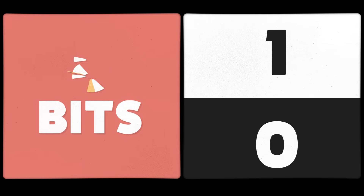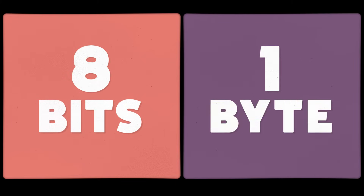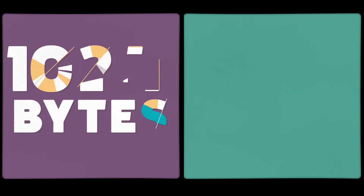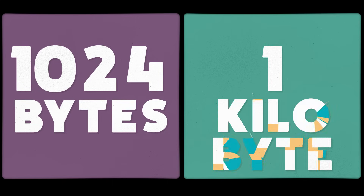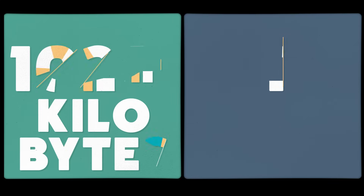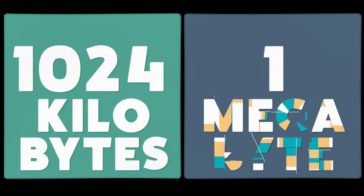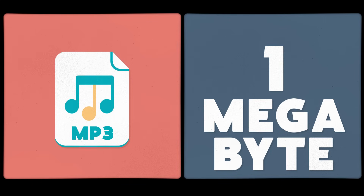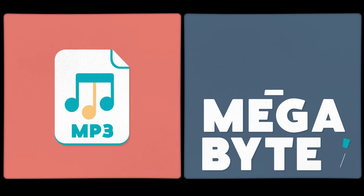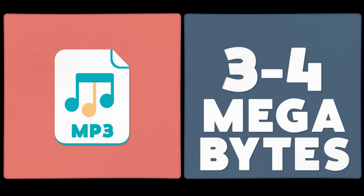Eight bits strung together makes one byte. One thousand bytes all together is a kilobyte. One thousand kilobytes is a megabyte. A song is typically encoded using about three to four megabytes.